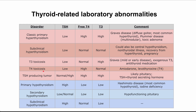T4 toxicosis is similar — you'll have high levels of T4 and in response a low TSH. Amiodarone, a cardiac rhythm drug, is known to cause T4 toxicosis as a serious side effect. Exogenous administration of T4, called levothyroxine — commonly used to treat hypothyroidism — can also cause T4 toxicosis if abused.